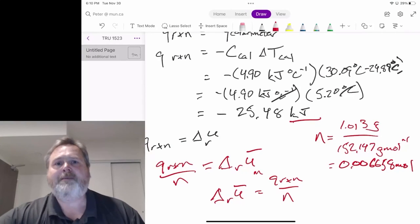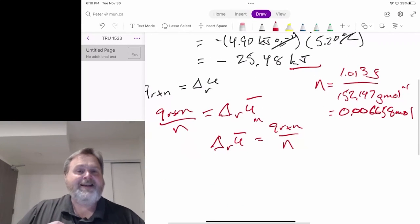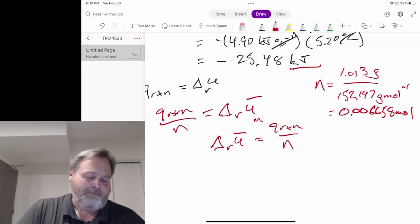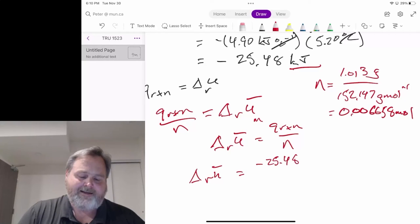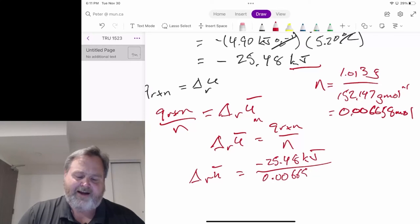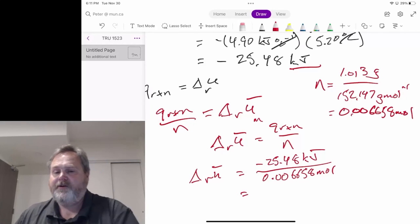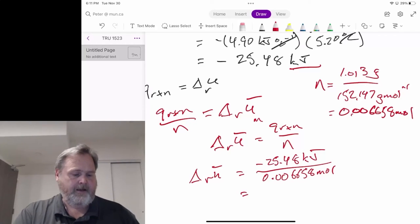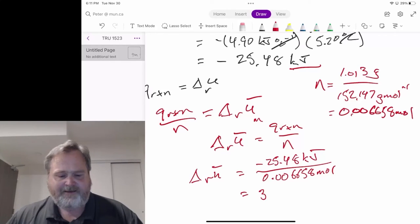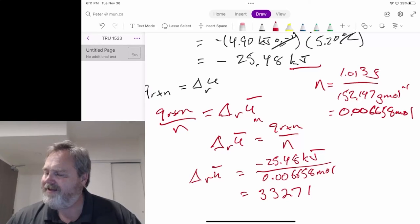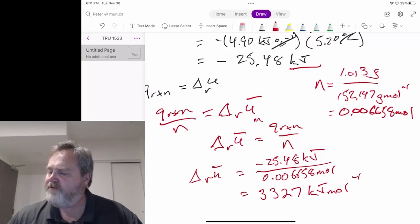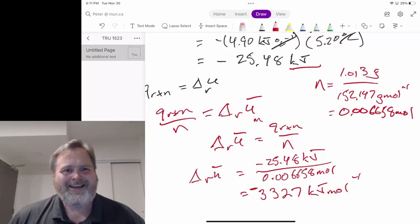So now, our molar amount, of course, when I tilt things sideways, that doesn't always work out very nicely for me. But yeah, our molar amount is going to be that negative 25.48 kilojoules divided by 0.006658 moles of actual vanillin that we burned. That is going to give us 3,327 kilojoules per mole. And of course, let's be careful. We've got to remember that negative sign. The burning is giving that off.